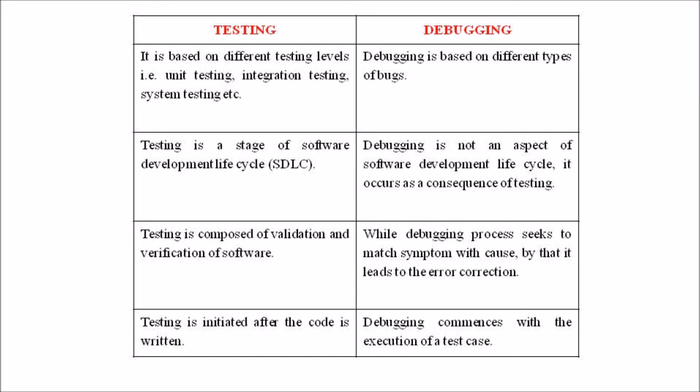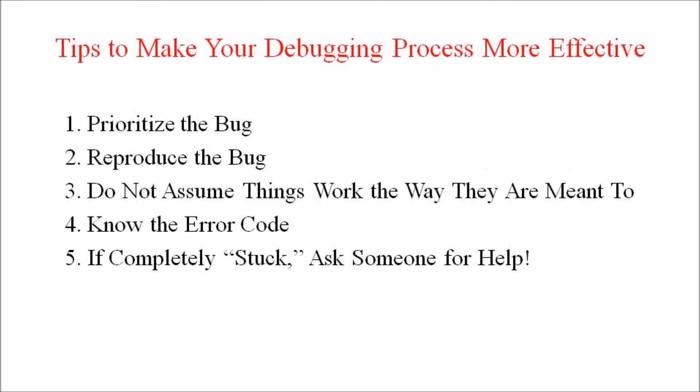Hope you have understood the difference between testing and debugging. Some tips to make the debugging process more effective are: first, prioritize the bug; second, reproduce the bug; third, do not assume things work the way they are meant to; fourth, know the error code; and finally, if we are stuck in a particular code, ask for help.